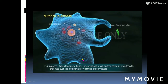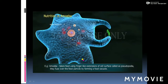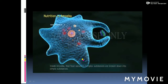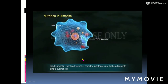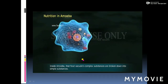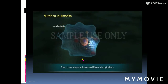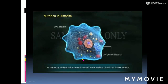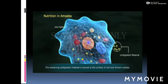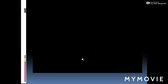The pseudopodia fuse over the food particle, forming a food vacuole inside the amoeba. Inside this food vacuole, complex substances are broken down into simple substances. These simple substances then diffuse into the cytoplasm. The remaining undigested material is moved to the surface of the cell and thrown outside.